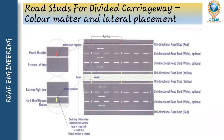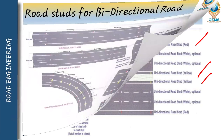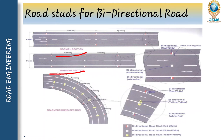Road studs for a divided carriageway show color and lateral placement. As you can see, there is a pavement shoulder, a 50 mm center line, extreme left and right lengths, and yellow color marking on the pavement indicating a desirable 100 mm clear direct distance from the vertical facing of the riser of the curve to the road stud. Unidirectional road studs can be red, white, or yellow, and can be used for normal, wearing, or overtaking sections.